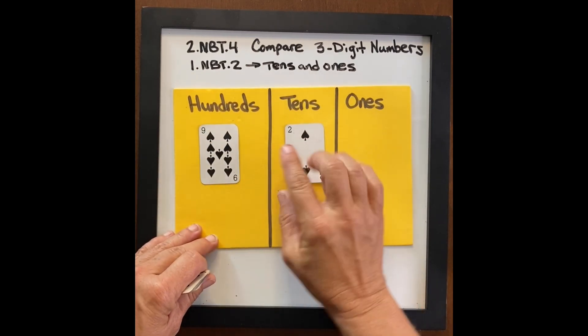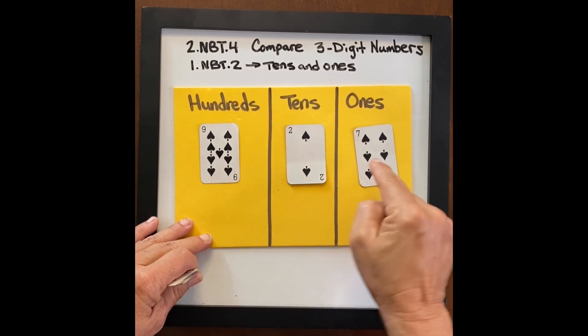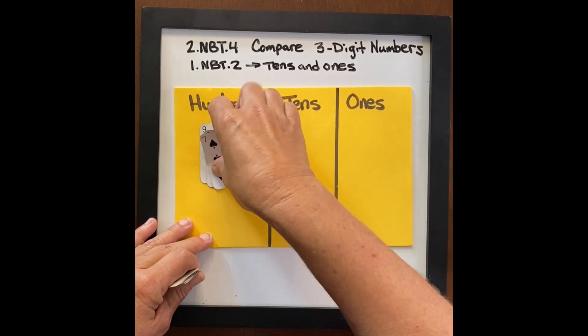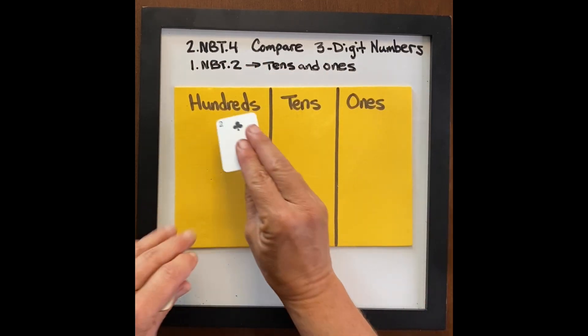Nine hundred, nine hundred twenty. Nine hundred twenty seven. That's going to allow you to compare two three-digit numbers.